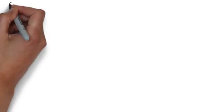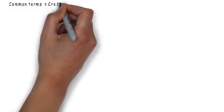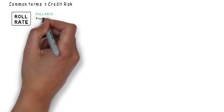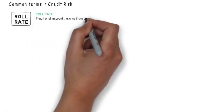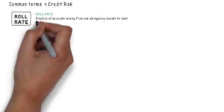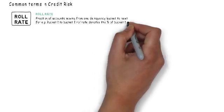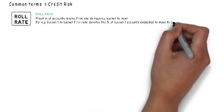Let's understand some common terms used in credit risk. Roll rate refers to the movement of accounts across different delinquency buckets. For example, bucket 1 to bucket 2 roll rate specifies the proportion of accounts moving from bucket 1 to bucket 2 in the next one month.